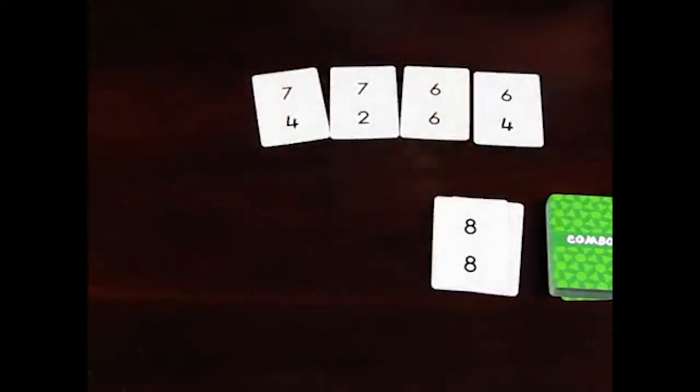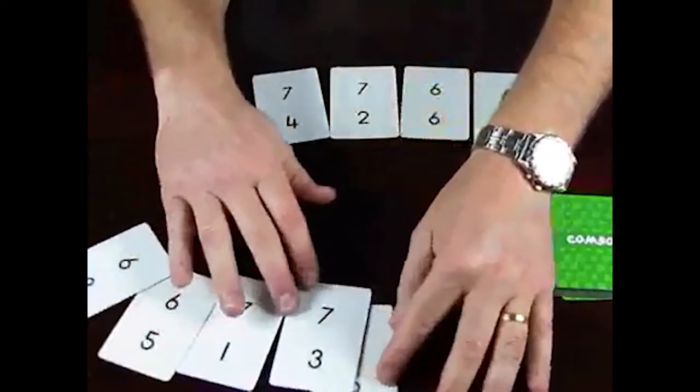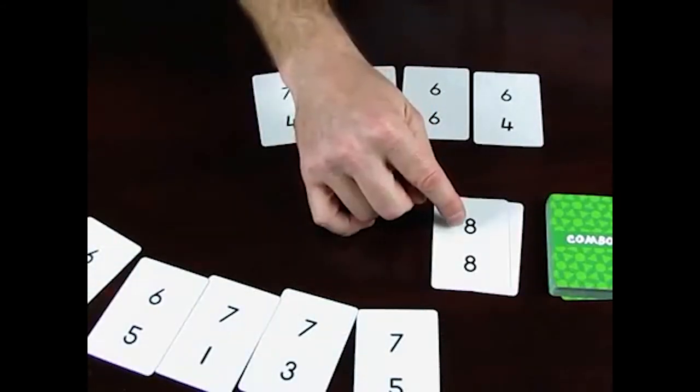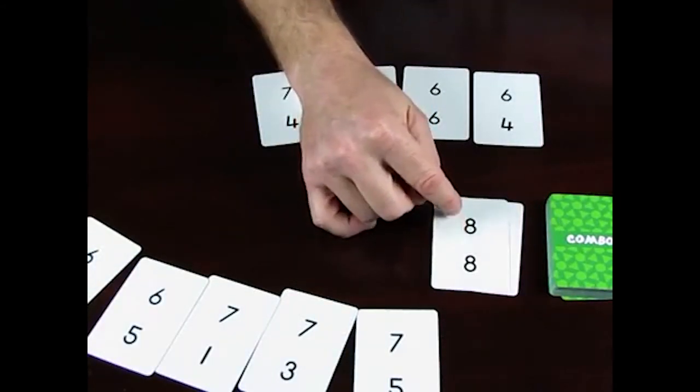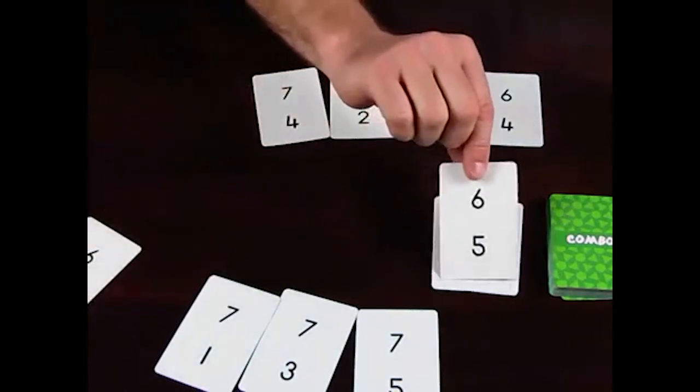Now let's have a look at what the other player has here and whether that player can match in some way. Now I can see a match. For example, I could say here that eight divided by eight is one. Six take five is one, and so I'll put that card on there.